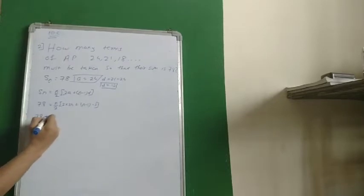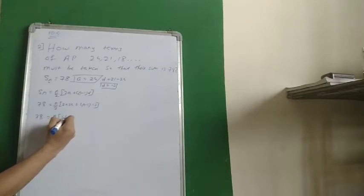So 78, N upon 2, 24 times 2 is 48. I'll open the bracket, minus 3N plus 3.